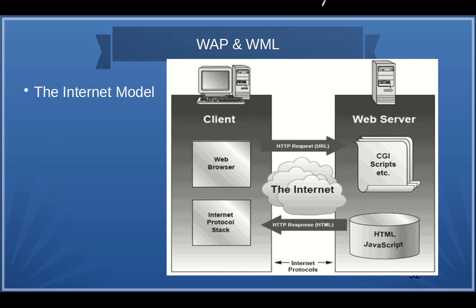Let's understand the difference between WAP and HTTP. In the normal HTTP or internet model, we have a client and a web server. The client uses a desktop with a web browser as the client software. The web browser prepares an HTTP request sent as a URL to the web server. The web server locates the page and executes any server-side script such as JavaScript, PHP, or JSP. The result is prepared as HTML and JavaScript, sent back as an HTTP response over the internet protocol stack.